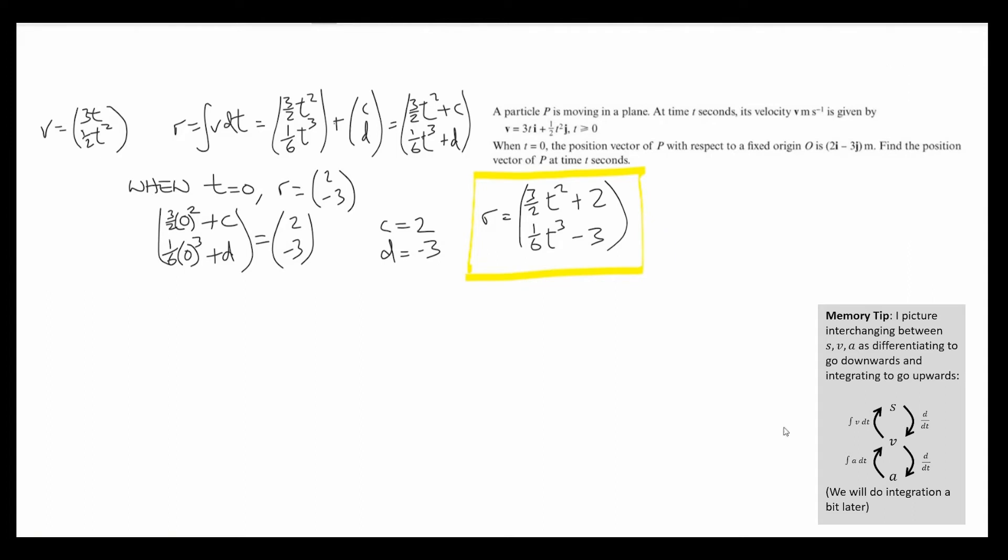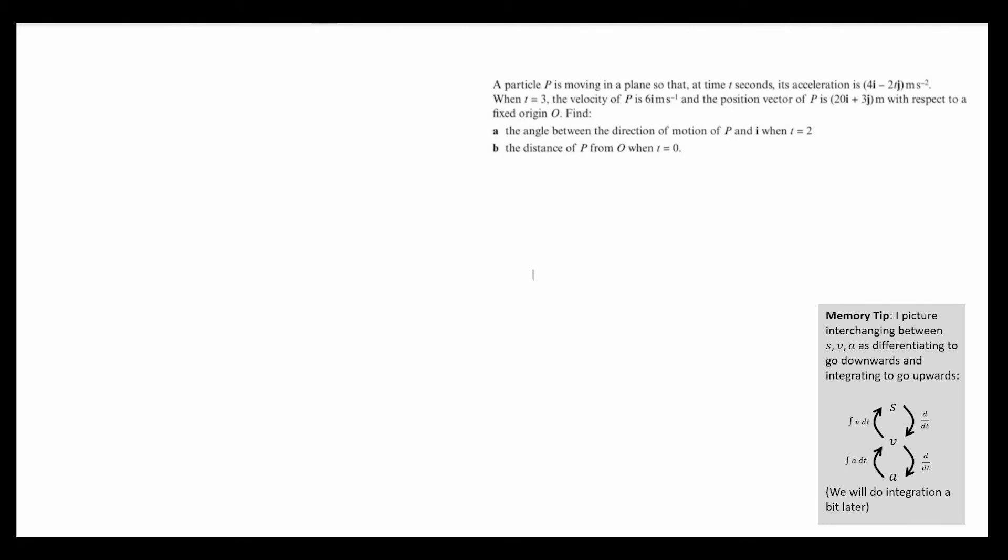Let's have a look at a second question with a bit more to do. In this question, we've been told that a particle p is moving in a plane so that at time t, its acceleration is 4i minus 2tj meters per second squared. When t equals 3, the velocity of p is 6i meters per second and the position vector is 20i plus 3j meters. We've first been asked to find the angle between the direction of motion of p and i when t equals 2. The direction of motion is always going to be the velocity.